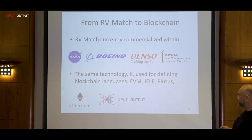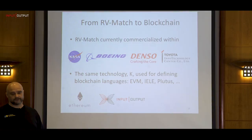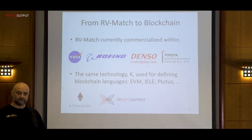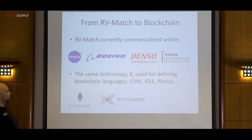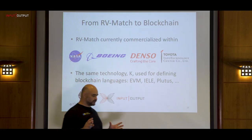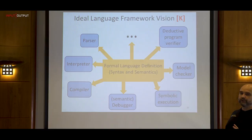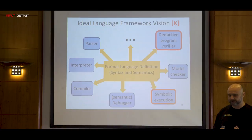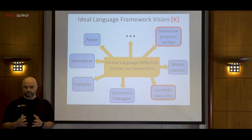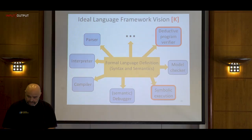We started looking into blockchain languages mainly because this is a place where correctness of programs has huge importance — as I said, most security attacks are rooted in errors in programs. I'll now focus on program verification, because this is one of the most important goals: how we can do deductive verification of programs based on a formal semantics — and crucially, the same formal semantics we use for execution and interpretation.